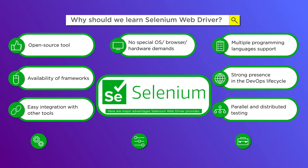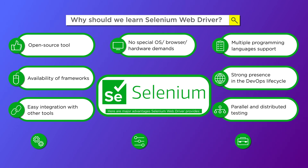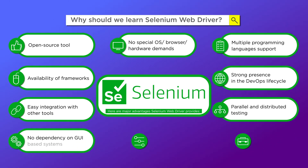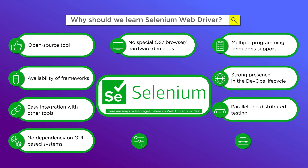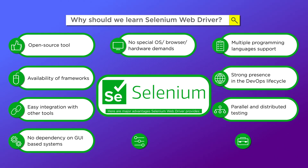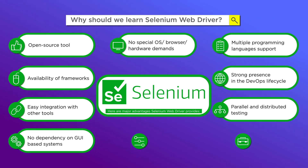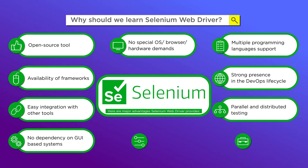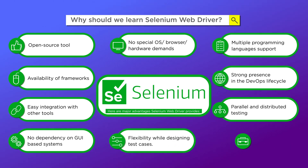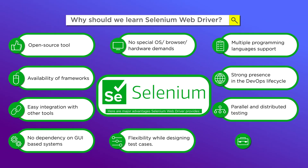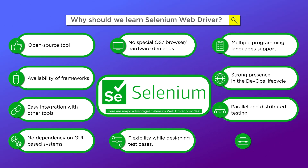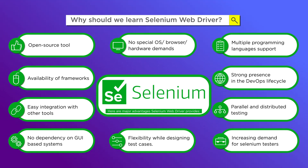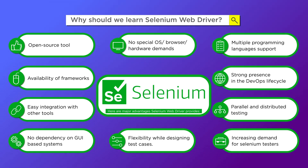Parallel and distributed testing is another benefit. Multiple Selenium test cases can be executed in parallel on the same machine or on remote machines — Selenium Grid is used for executing test cases on remote machines. There is also no dependency on GUI-based systems; since Selenium tests can be executed without a GUI, the tests can be carried out on web servers and automation can be achieved by scheduling execution and integrating with other tools. No GUI also means the performance of your machines will drastically improve. Selenium also offers flexibility while designing test cases, either via programming logic or by record and playback approach. Finally, there is increasing demand for Selenium testers, as Selenium's usage is growing consistently and the demand for Selenium testers is growing proportionally.